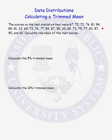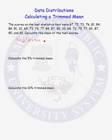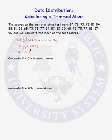Here we have a list of 25 scores on the last statistics test. To calculate the mean, there are 25 data points, so the mean is 1/25th of the sum of all data values. The sum of the data values is 1895; dividing by 25 gives us a mean of 75.8. So X-bar is 75.8.